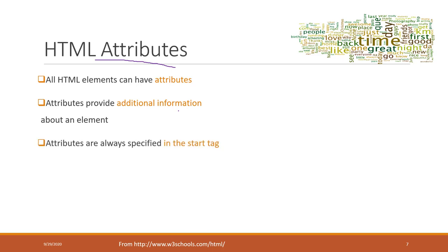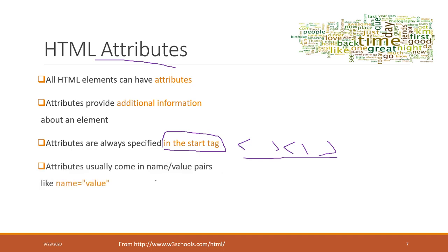Normally, attributes are specified in the starting tag — remember that the starting tag does not have a slash, while the ending tag does. Attributes usually come in name-value pairs, so it's like name equals value, and the value always has double quotation marks.